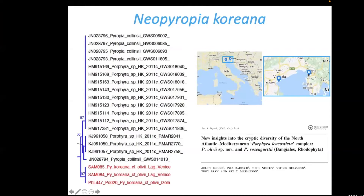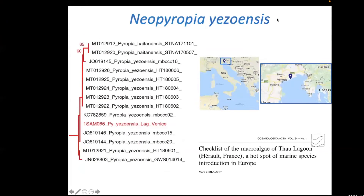We can say N. koreana is possibly an alien species in the Mediterranean, but it has been present for at least 100 years. Neoporphyra iodens appears to be an allochthonous species, found only in Venice, in an area associated with an aquaculture industry. It had been reported once before in the Mediterranean but without molecular tools; we confirmed it from Venice with molecular identification.